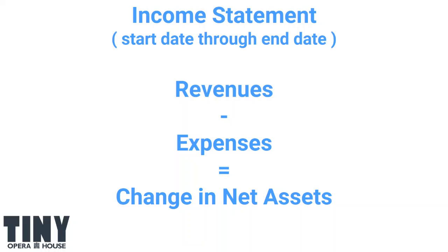It's a pretty simple one: the money that you've made less the money that you spent is your change in net assets, which is the nonprofit term for net income. This is going to be our starting point when we look at budgeting — basically an adaptation of an income statement, but instead of looking at the past, we're going to look into the future with it.